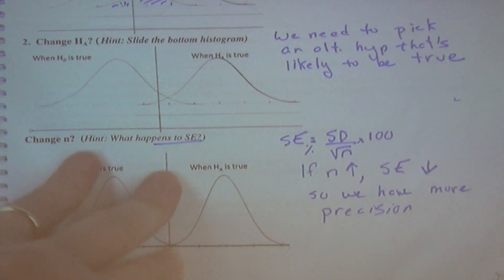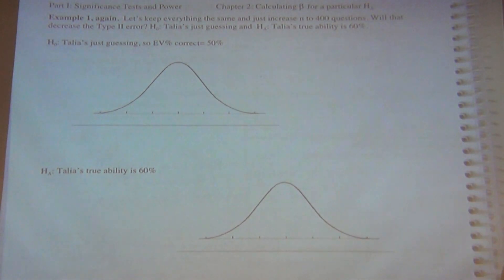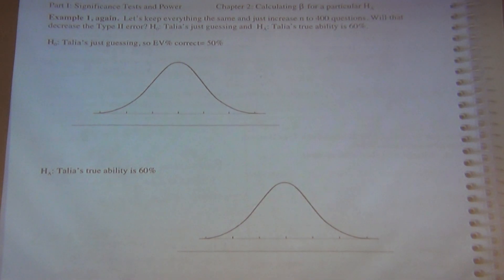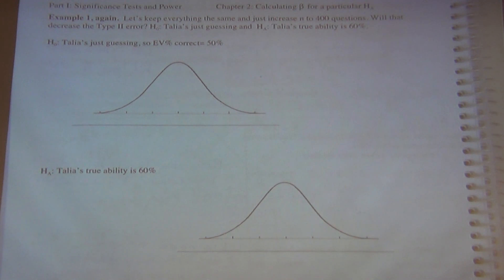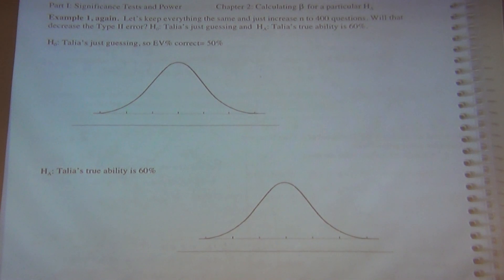If you flip a coin four times, you'd have a 25% chance of getting all heads — you wouldn't say it's a fake coin if you got all heads, because there are only four possibilities. One quarter of the time you'd get all heads — 100% heads, way far from 50%. Whereas if you did it a hundred times, you'd be very shocked if you got all heads. So: bigger sample size means more precision.